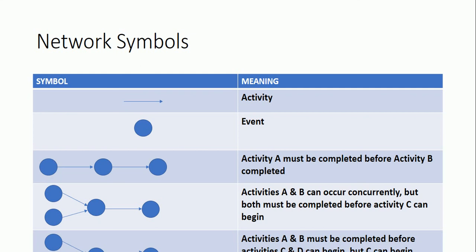Here, Activity A and Activity B can occur concurrently, but both must be completed before Activity C can begin. In another arrangement with three arrows and four nodes, Activity A and B must be completed before Activity C and D can begin, but C can begin independently of D.